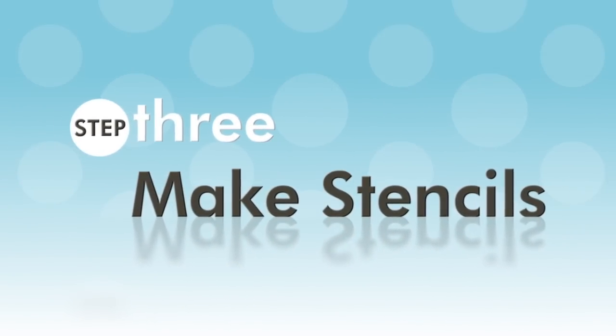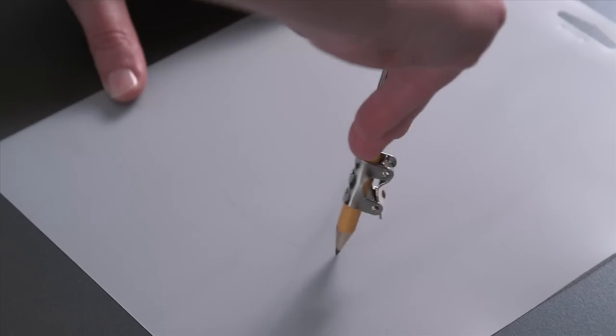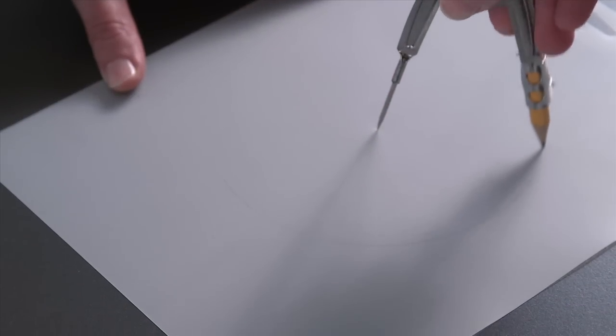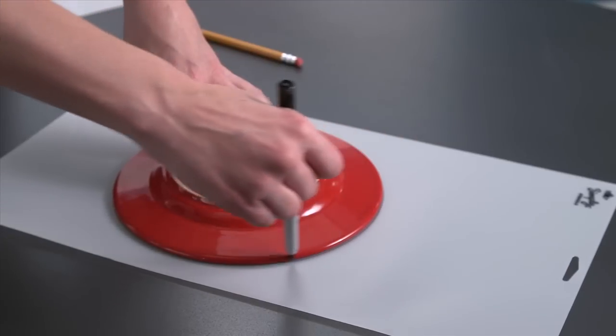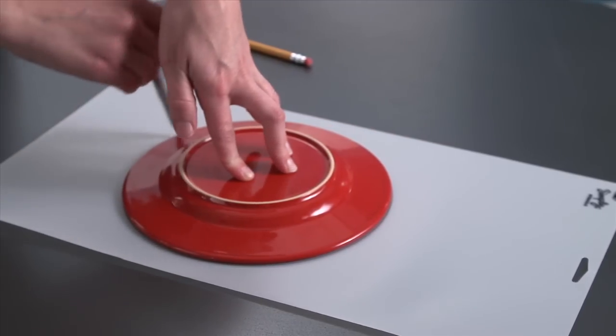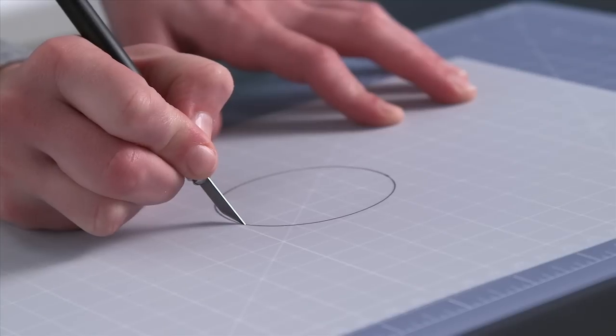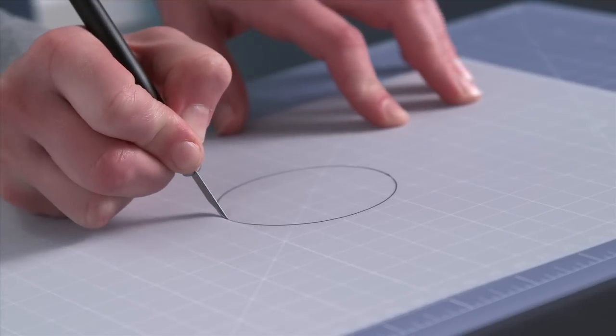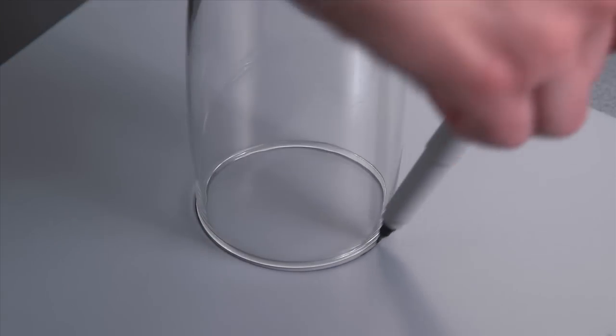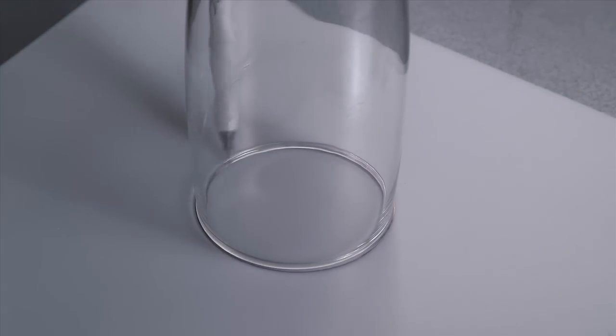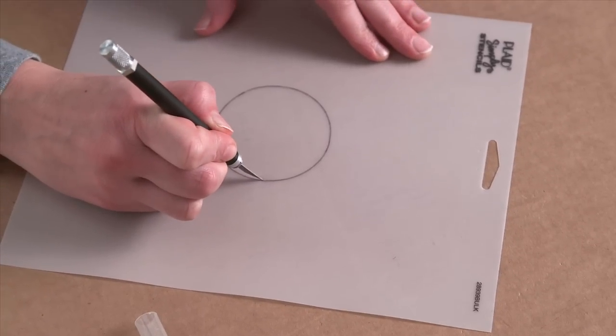Step 3: Make stencils for the dots. Use a compass to trace circles on the stencil sheets. If you don't have a compass, simply use a round object like a dinner plate. Carefully cut the circles out using a sharp pen knife. If you want a variety of dot sizes, create a pattern for each circle size and cut them out.